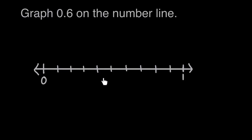three, four, five, six, seven, eight, nine, 10 equal spaces. These tick marks, there's 10 of these spaces all the way from zero to one.